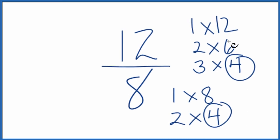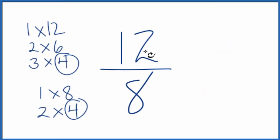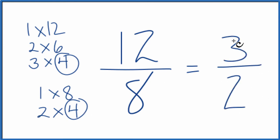Let's move this over here. So 12 divided by 4 equals 3, and 8 divided by 4 equals 2. So 12 over 8 is equal to 3 over 2 — they have the same value.